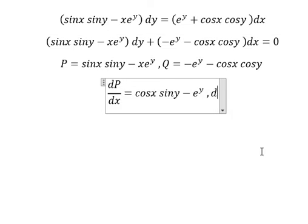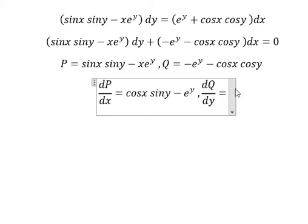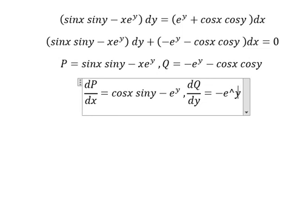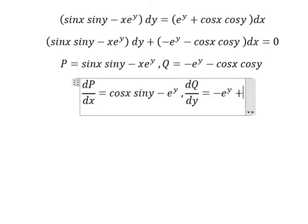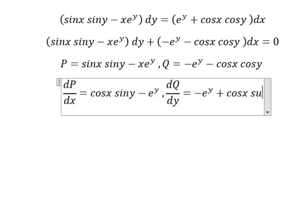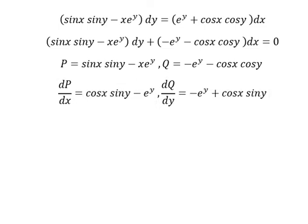For this one we have negative e^y, and for cosy we have negative siny. Negative with negative gives positive. We can see that dP/dx and dQ/dy are the same, so this is exact.